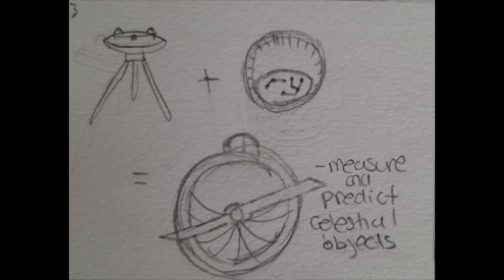The combination of these two systems created an astrolabe, which could simultaneously measure or predict the positions of celestial objects, and acted almost like a celestial calendar.